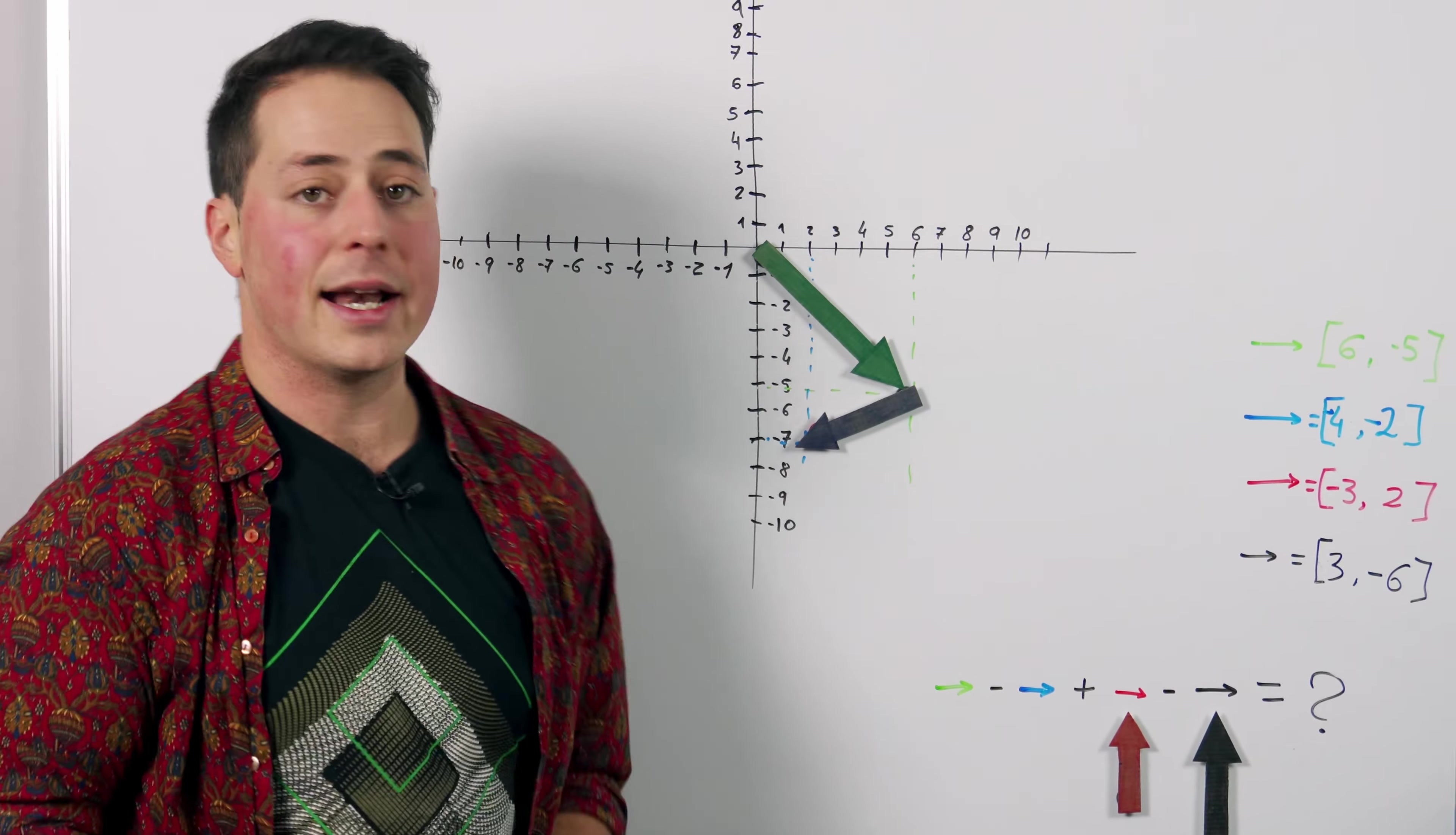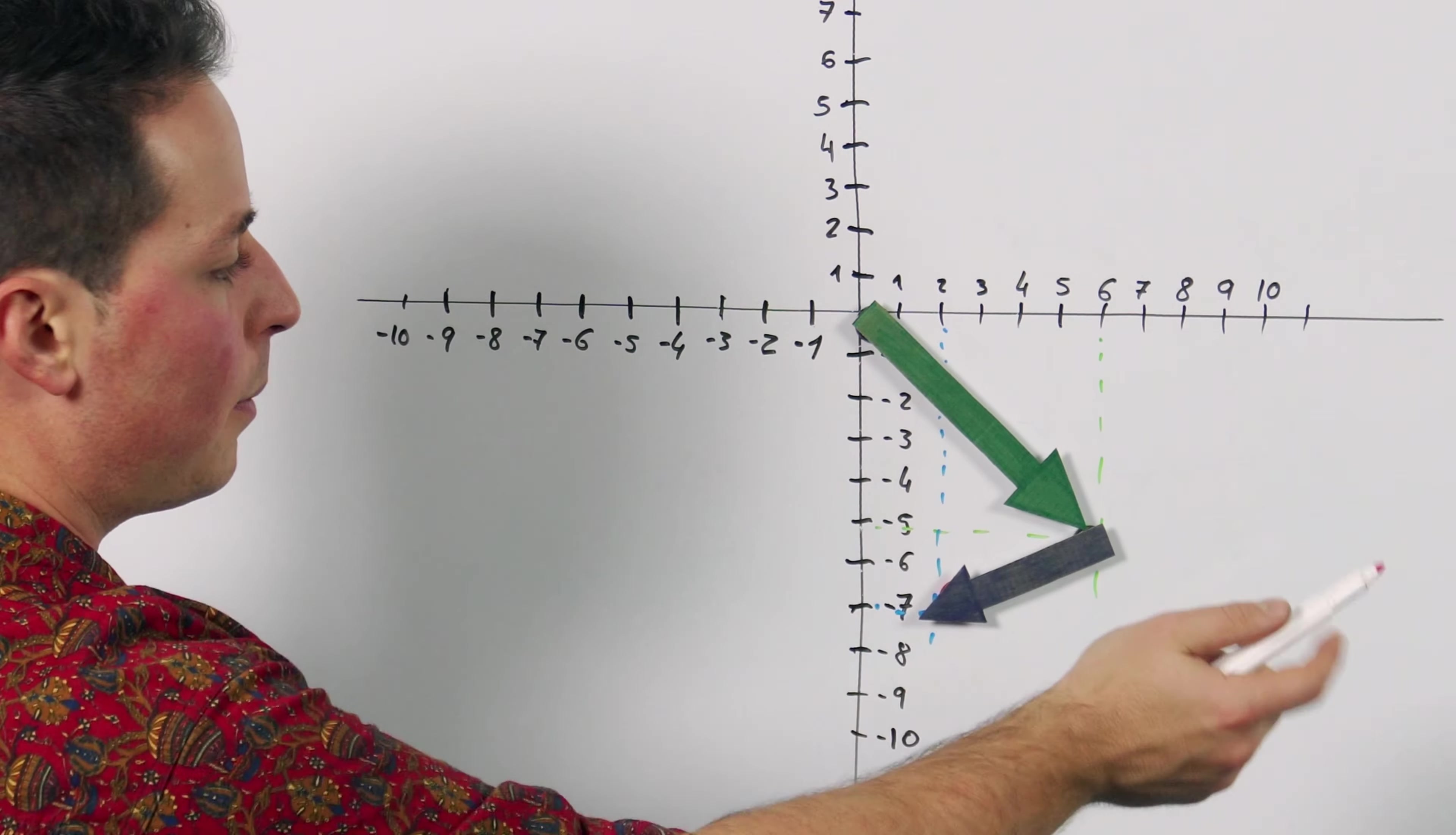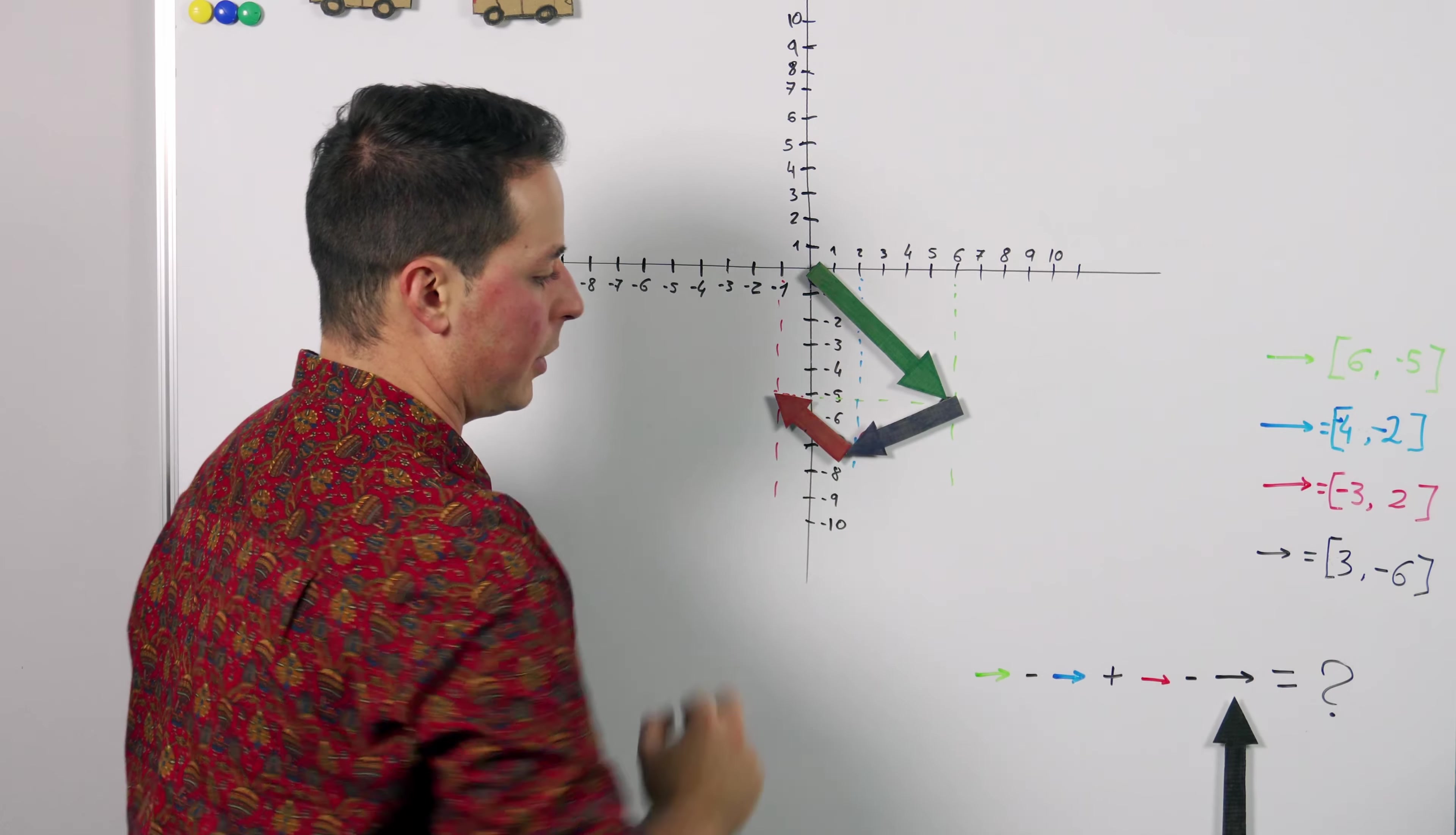The red vector is the next one in line and this has a plus in front of it so we don't need to do anything with it. Just count the places after the blue one. 2 minus 3 is minus 1 and minus 7 plus 2 minus 2 is minus 5. So our red vector ends up just about there.